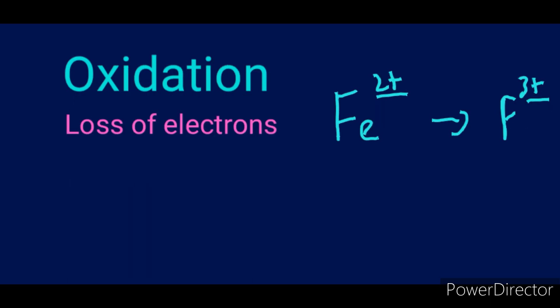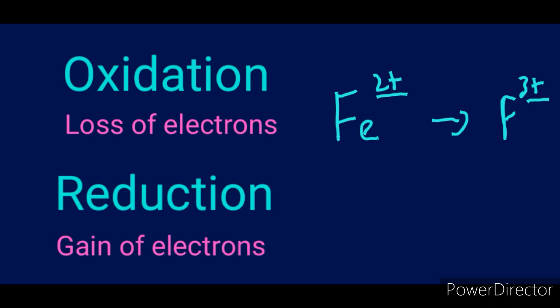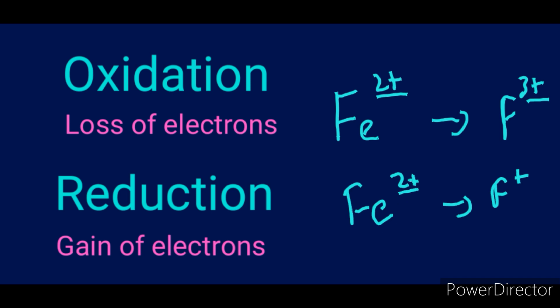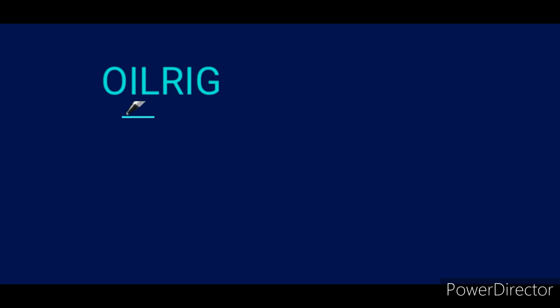Now let's talk about reduction. Reduction is the gain of electrons. For instance, let's say on the left hand side we had Fe 2+ and then it became Fe+. This was reduced because the oxidation number decreased from 2 to 1. Whenever an atom gains electrons the oxidation number decreases. We use the word OIL RIG to memorize it — oxidation is loss, reduction is gain of electrons.